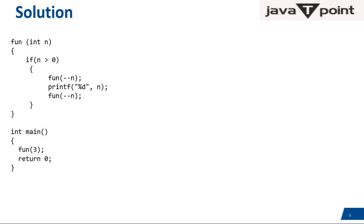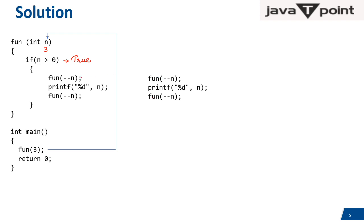Let me explain. Starting from main: function(3) is called, it jumps to its body and n now has the value 3. Since 3 is greater than 0, the condition is true. The function breaks into three parts. The n value of 3 is passed — and with pre-decrement, this becomes 2.